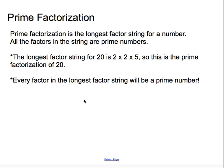Those are really important parts to remember. The longest factor string for 20 is 2 times 2 times 5, so this is the prime factorization of 20. Always make sure that you are checking. Every factor in the longest factor string will be a prime number, always. If you have some composite numbers in the string, you still have not found the longest string.